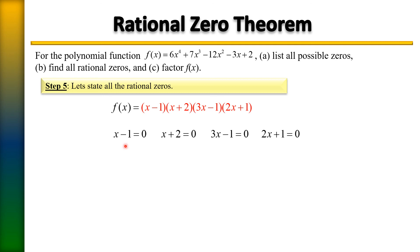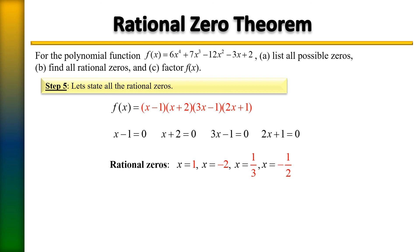The last step is to state the rational zeros using the zero factor property — set each factor equal to zero and solve for x. From x minus 1: x = 1. From x plus 2: x = negative 2. From 3x minus 1: add 1 and divide by 3 to get x = one-third. From 2x plus 1: subtract 1 and divide by 2 to get x = negative one-half. The four rational zeros are 1, negative 2, one-third, and negative one-half.